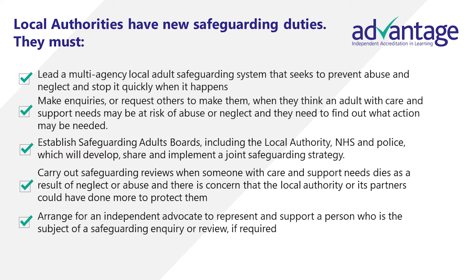Local authorities must also establish safeguarding adult boards including the local authority, NHS and police, which will develop, share and implement a joint safeguarding strategy. They must carry out safeguarding reviews when someone with care and support needs dies as a result of neglect or abuse and there is concern that the local authority or its partners could have done more to protect them. Finally, they must arrange for an independent advocate to represent and support a person who is the subject of a safeguarding inquiry or review if required.